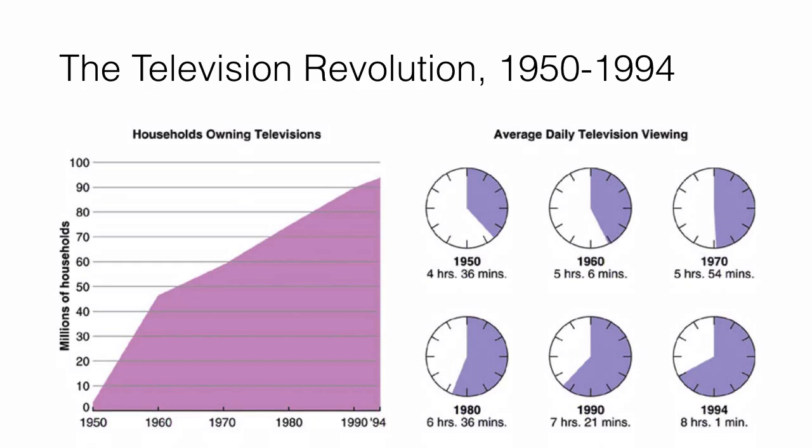The television revolution, which happened between 1950 to 1994, indicates that since people were more prosperous, they had a little bit more time on their hands. They're now watching television, a new technology that is getting really popular in the 1950s. Between 1950 and 1994, television viewing actually doubled because there were more TVs in people's homes, and more and more people are spending time eating dinner in front of their television.